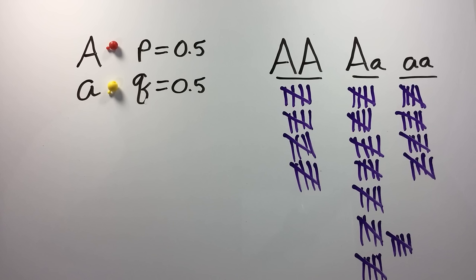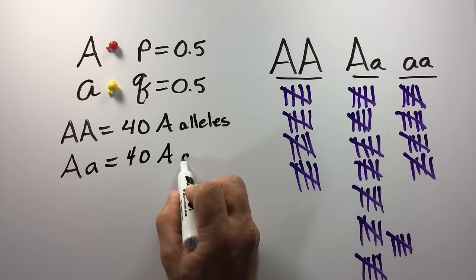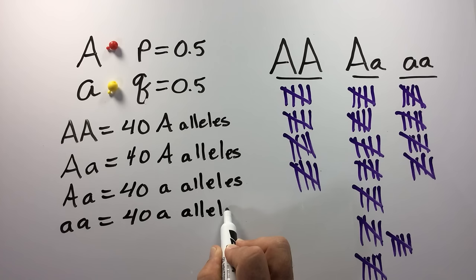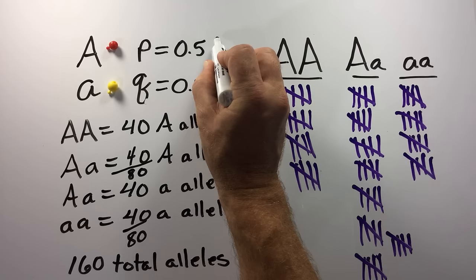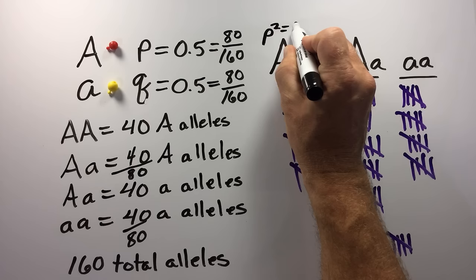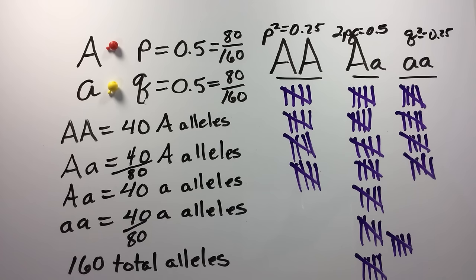We can determine the allele frequencies in this population by counting up the numbers of individuals with different genotypes. The 20 homozygous big A individuals contain 40 big A alleles. The 40 heterozygotes have both 40 big A alleles and 40 little a alleles. The 20 homozygous little a individuals also have 40 little a alleles. When we add these up, we see that we have a total of 160 alleles — 80 big A and 80 little a — meeting our expectations under the model of equal allele frequencies.